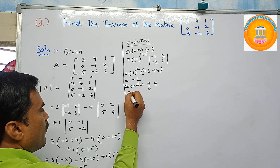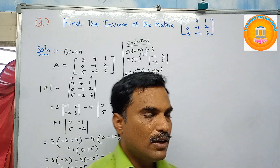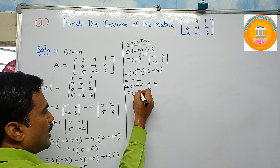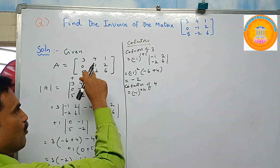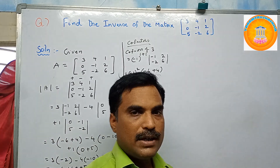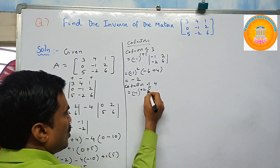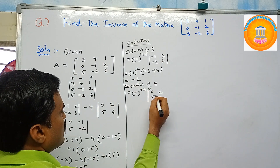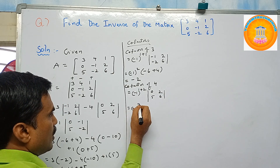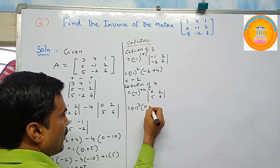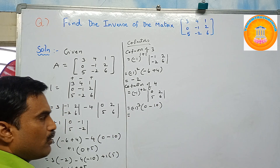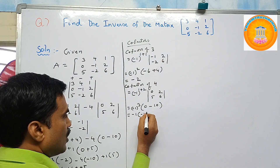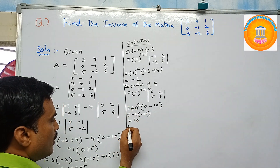Cofactor of four: four is in the first row and second column, so i equals one, j equals two. Minus one to the power one plus two equals three. The minor is the determinant of zero, two, five, six, which equals zero times six minus two times five equals zero minus ten equals minus ten. Since power three is odd, minus one times minus ten gives cofactor of four equals plus ten.